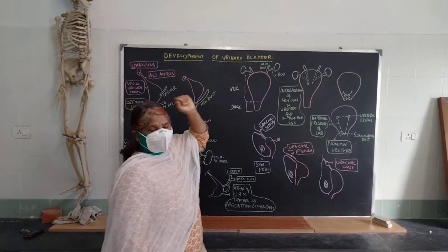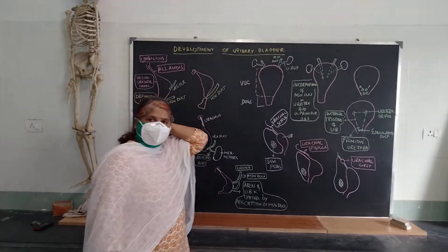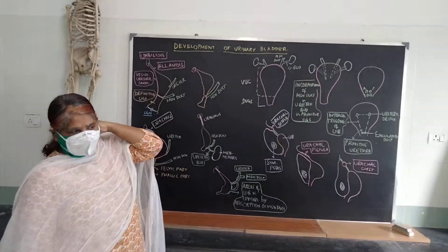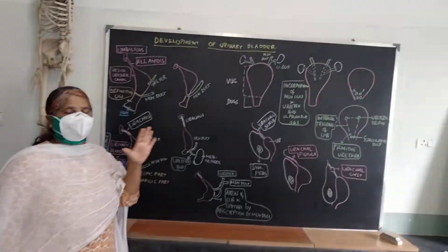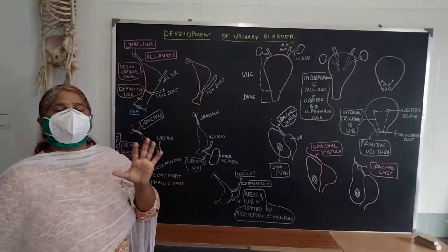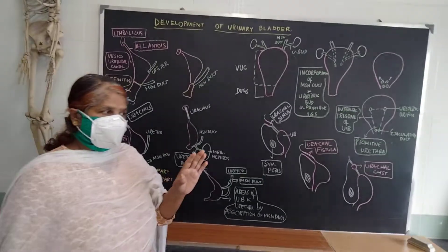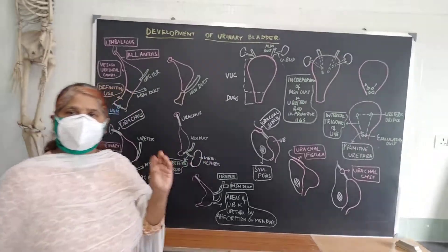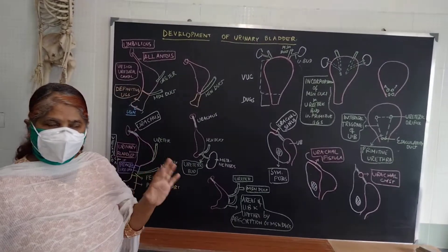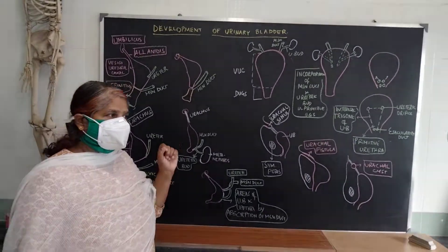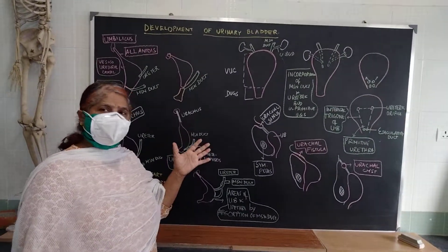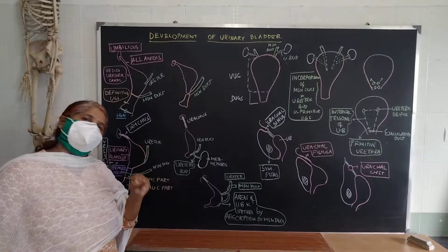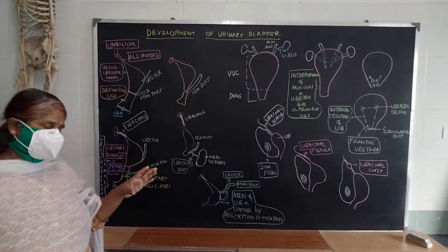Development of the urinary bladder. We have already seen the development of the kidney. The development of the ureter is from the ureteric bud, which takes its origin from the mesonephric duct, and who was the metanephros. So the ureter develops from the ureteric bud.